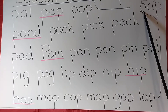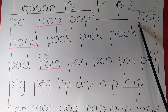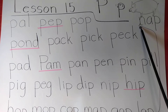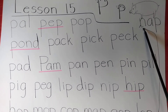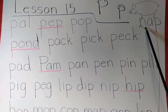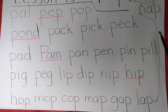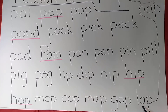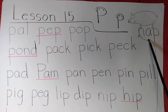And we've got a few more at the bottom. H-O-P — hop. M-O-P — mop. C-O-P — cop. M-A-P — map. G-A-P — gap. L-A-P — lap. N-A-P — nap. So the last four words rhyme: map, gap, lap, and nap.